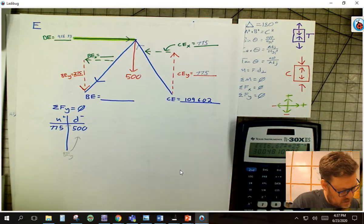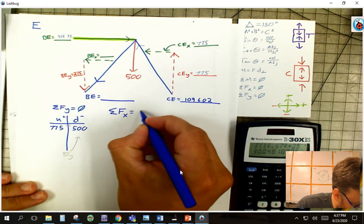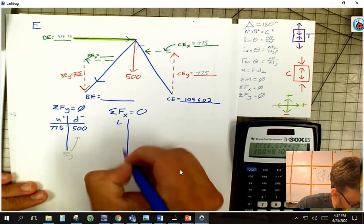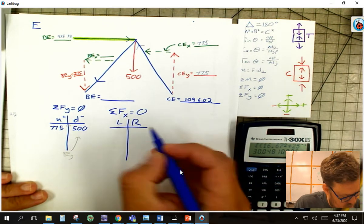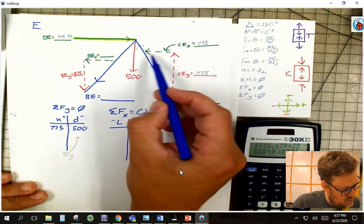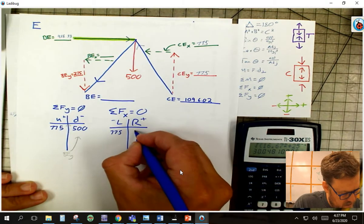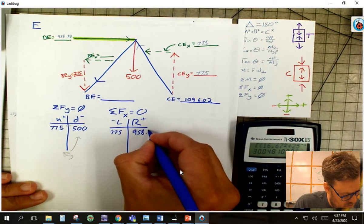This gets a little bit easier this time. Sum of the forces in the X have to equal zero. So left, right. Okay. Now, I can look at this guy and go, this one's going left at 775. This one's going right at 958.33.